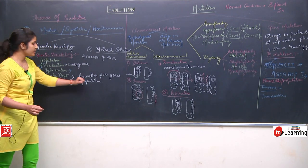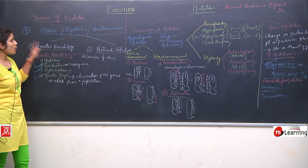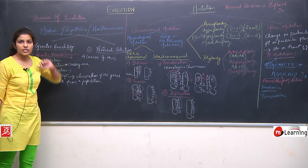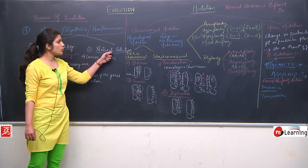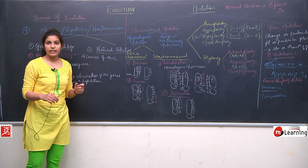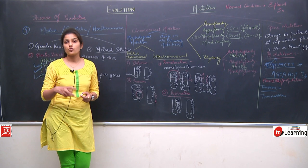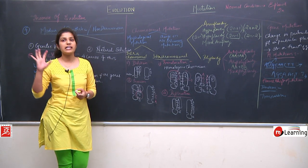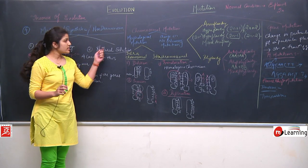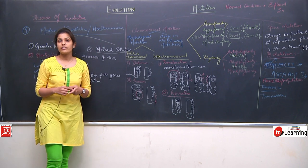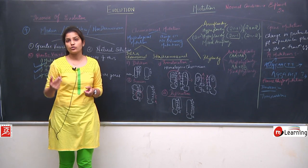This was about genetic drift, the last cause of genetic variability — the first postulate of the modern synthetic or neo-Darwinism theory. Now we will discuss the second postulate: natural selection. It was given by Darwin and states that any variation best suited to the environment will be naturally selected by nature and inherited to the next generation. We will discuss types and examples of natural selection.